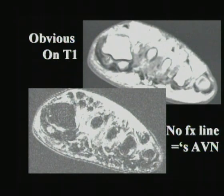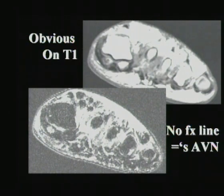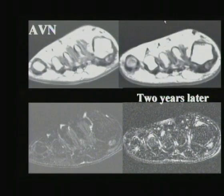In another patient, the tibial sesamoid is involved; the fibular sesamoid is normal. This is overt on T1-weighted imaging. It doesn't matter what it looks like on T2 — what matters is that something is wrong with it on T2. The more overt it is on T1, the more likely it is to be necrosis.